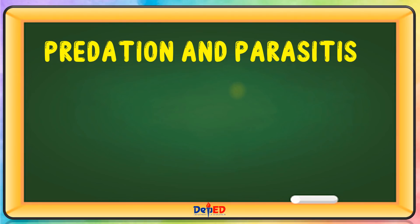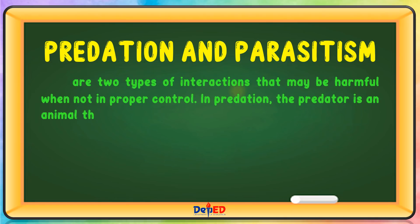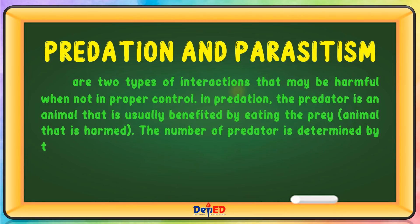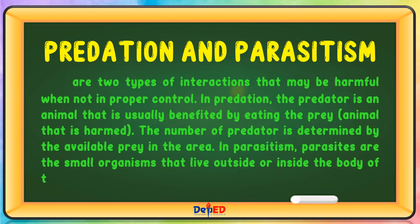Predation and parasitism are two types of interactions that may be harmful when not in proper control. In predation, the predator is an animal that is usually benefited by eating the prey, the animal that is harmed. The number of predators is determined by the available prey in the area. In parasitism, parasites are small organisms that live outside or inside the body of the host, the organism that is harmed.